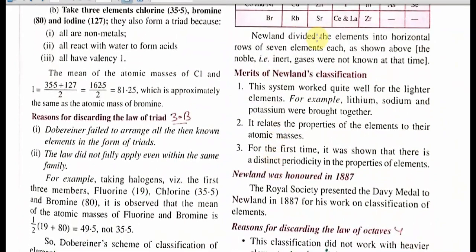Newland divided elements into horizontal rows of 7 elements each, and inert gases were not known at that time, so he had only 7 groups. Later, inert gases were discovered by Ramsay, and the 8th group — that is group 18 — was established. Good points of Newland's classification: this system worked quite well for lighter elements; it relates the properties of elements to their atomic mass; and for the first time, it was shown that there is a distinct periodicity in the properties of elements.